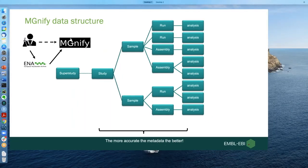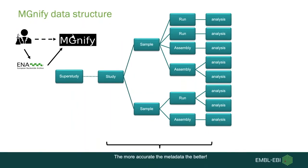It's important to have accurate metadata because we inherit it from ENA. It helps us populate certain things such as the biome — we predict the biome based on the metadata you give us, and it will be more accurate if the metadata inputted into ENA is very accurate. This also helps other users who want to pull down public datasets and compare them — the more metadata there is, the more useful that comparison becomes.